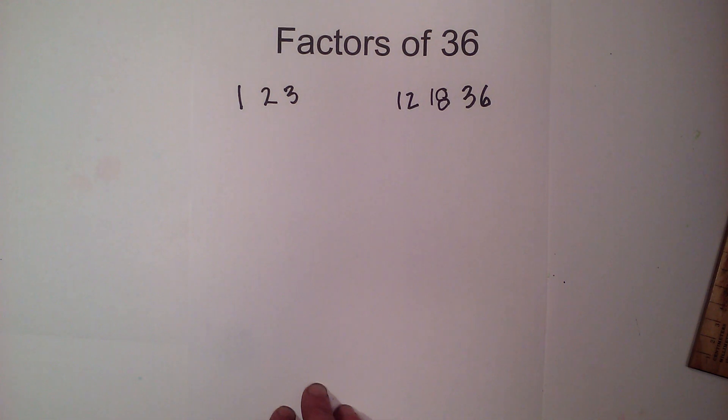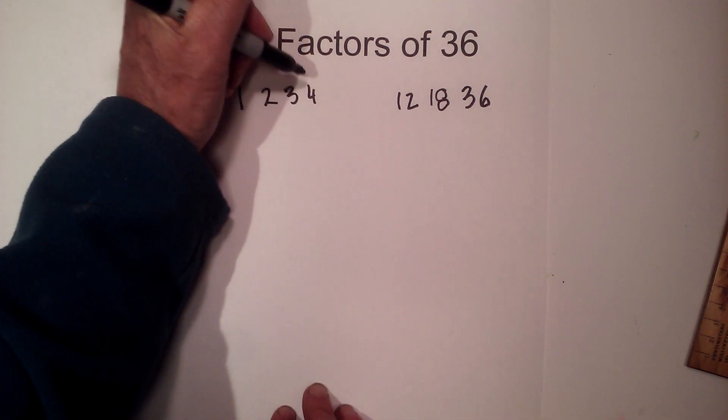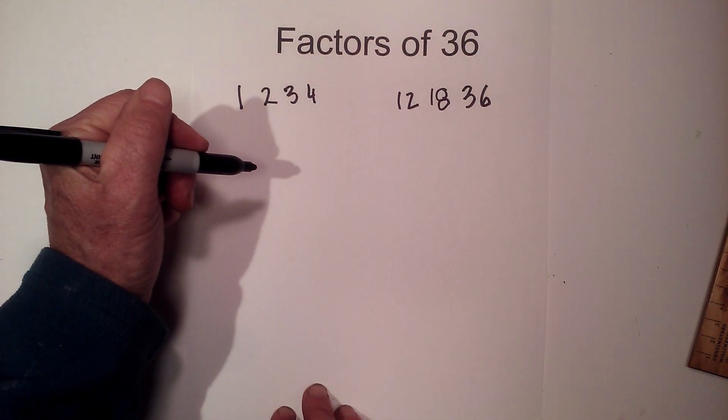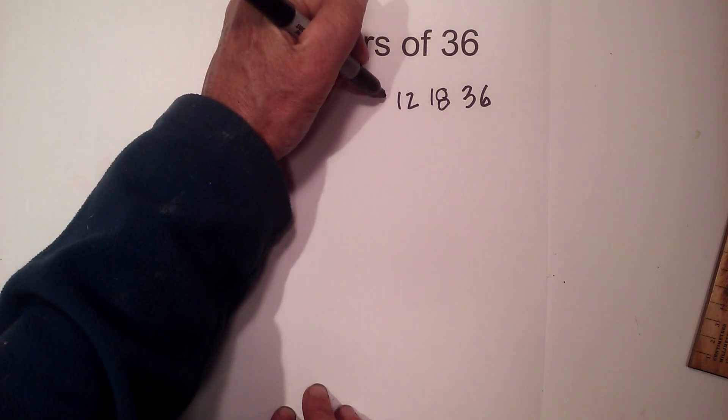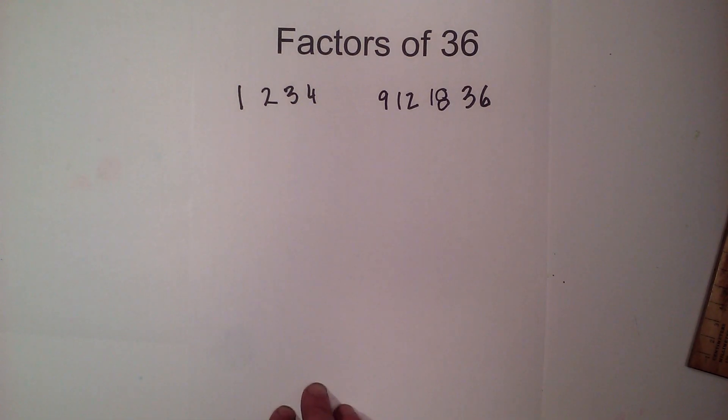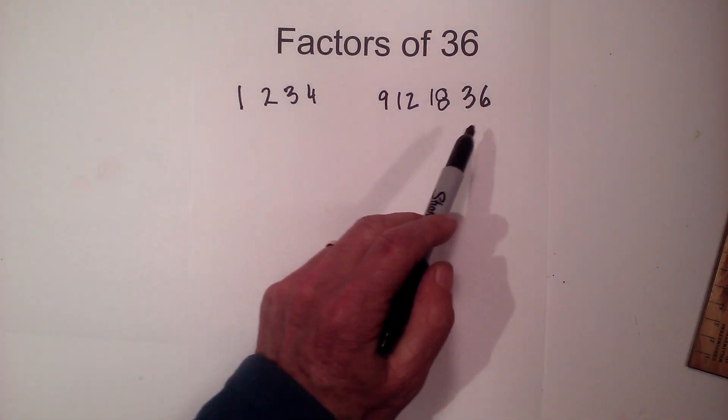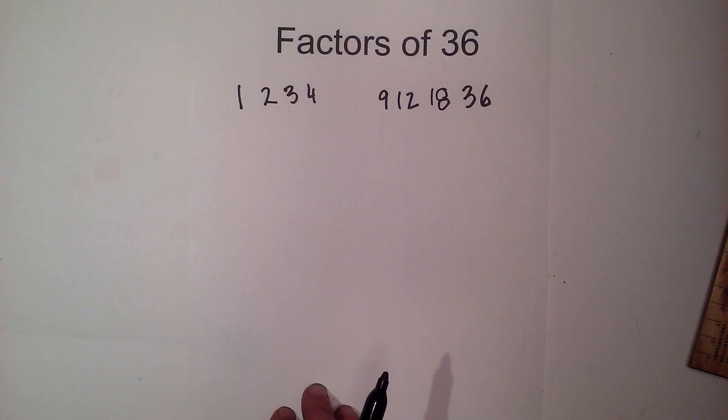Will 4 go into 36? Yes, 4 will go into 36 and that looks like 4 times 9 is 36. And will 5 go in? No because it does not end in a 5 or a 0.